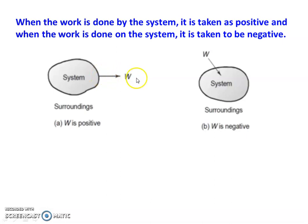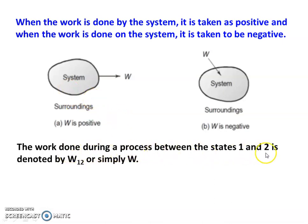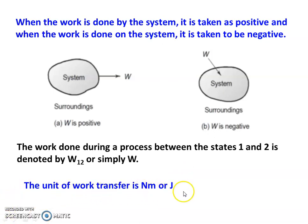When the system does work on the surroundings, it is positive. When work is supplied to the system, it is negative. In practice, turbines, steam turbines, gas turbines, and IC engines are work-producing devices — the work produced is positive. Pumps, fans, and compressors receive work — work given to the system is negative. Work done during a process between states 1 and 2 is denoted W₁₂ or simply W. The unit for work transfer is Newton meter or joule.